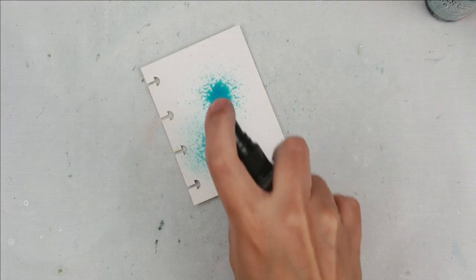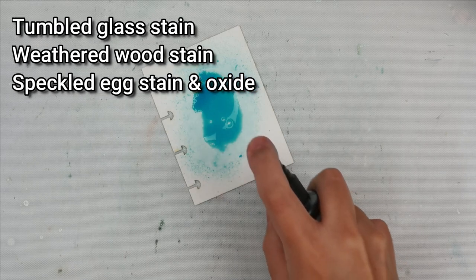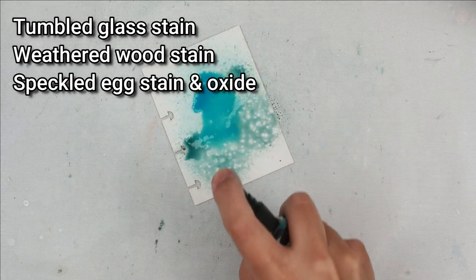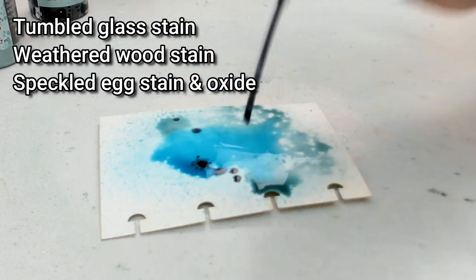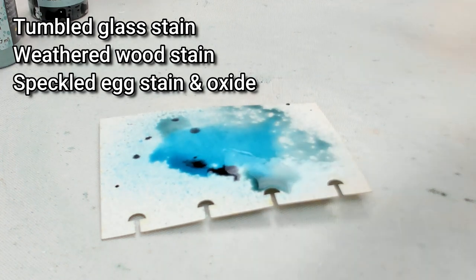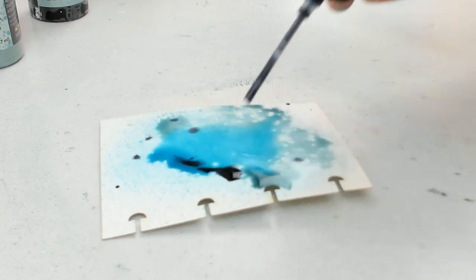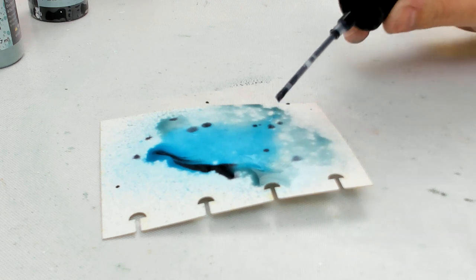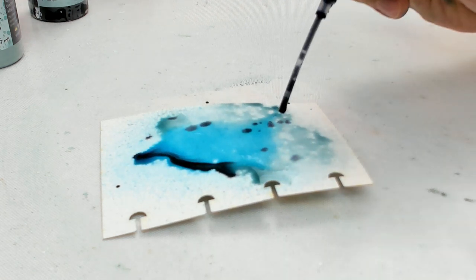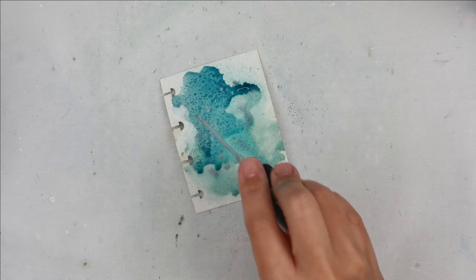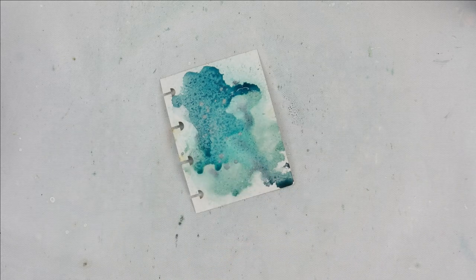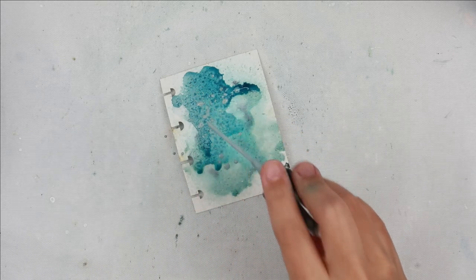For this next one I am using some Tumbled Glass Spray Stain, Weathered Wood Spray Stain, and Speckled Egg Spray Stain. I wanted to mention really quick that this journal is from Joggles. It is a disc-bound journal. I absolutely love it because I can add as many pages as I need or if I want fewer pages I can take some out.